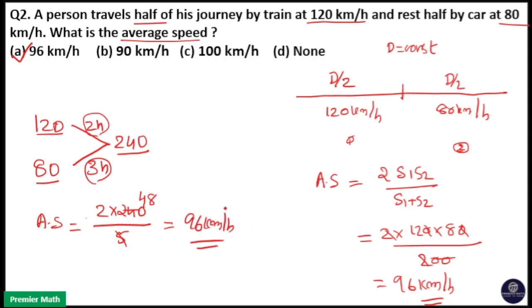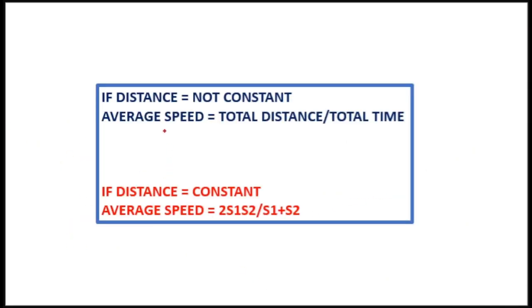So you can use any method here. If you don't know this formula, you can use this method as well. Whenever you have questions from average speed, if distance is not constant, use the formula total distance by total time for average speed. If distance is constant, you can use the formula 2 s1 s2 divided by s1 plus s2.